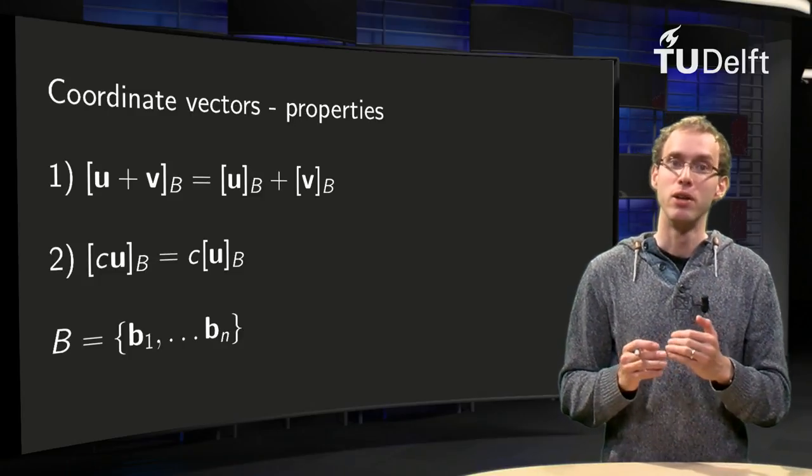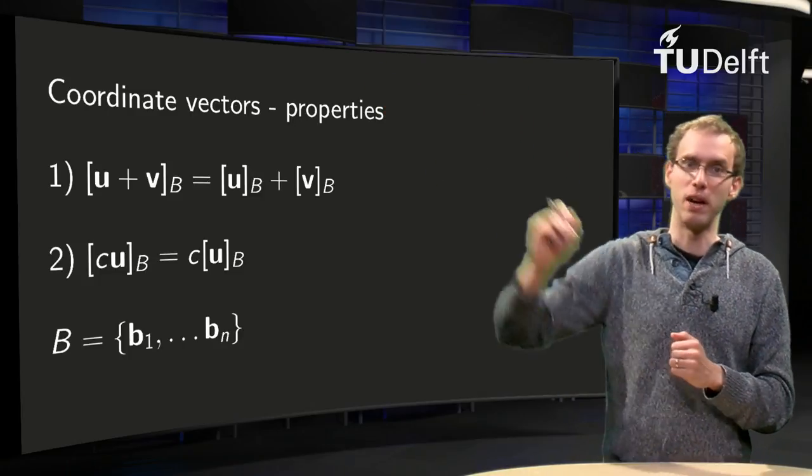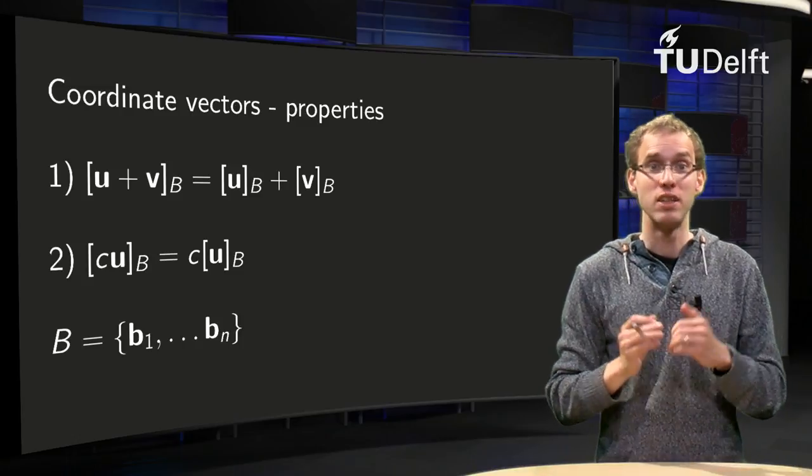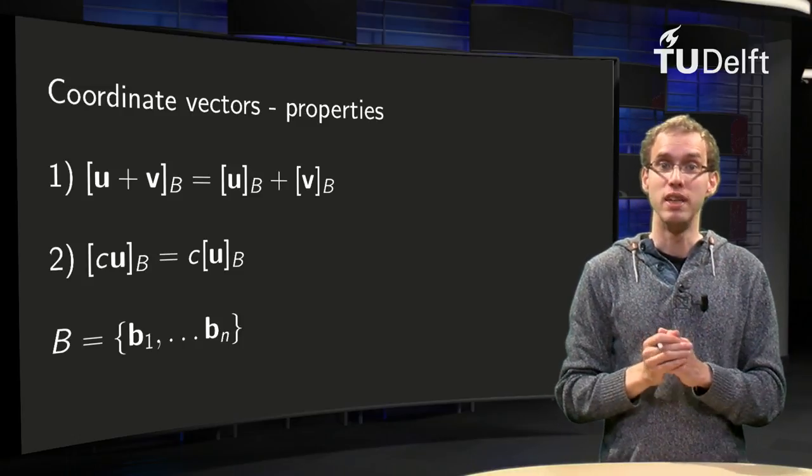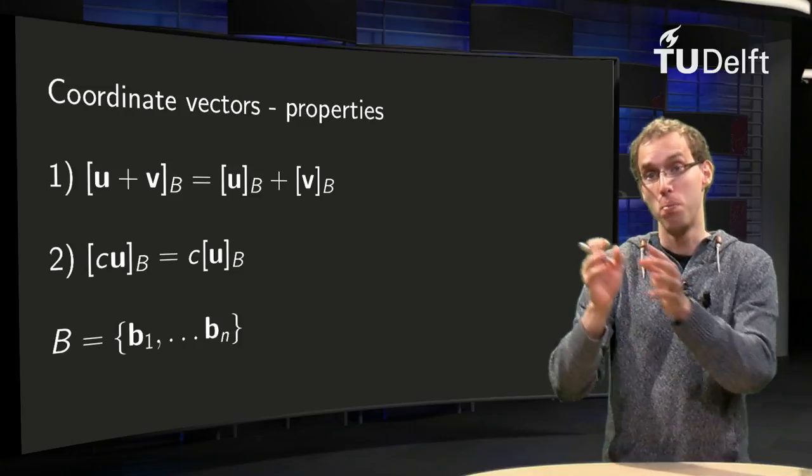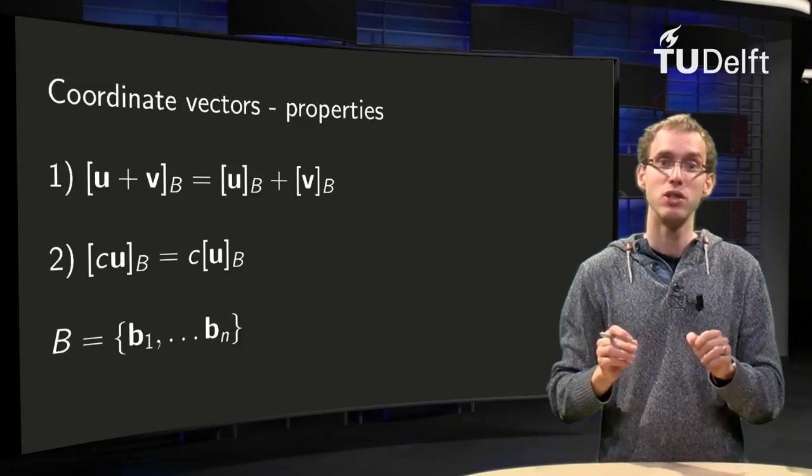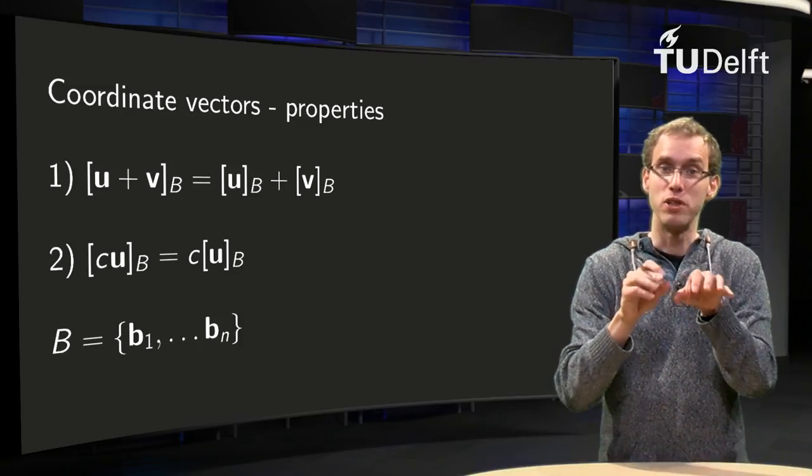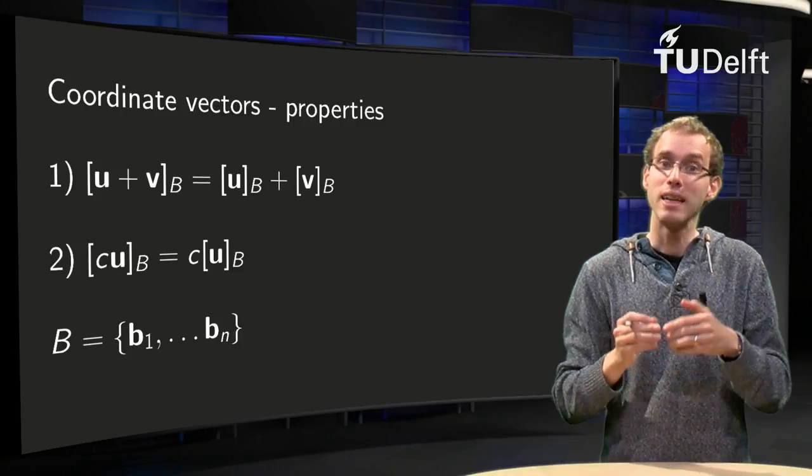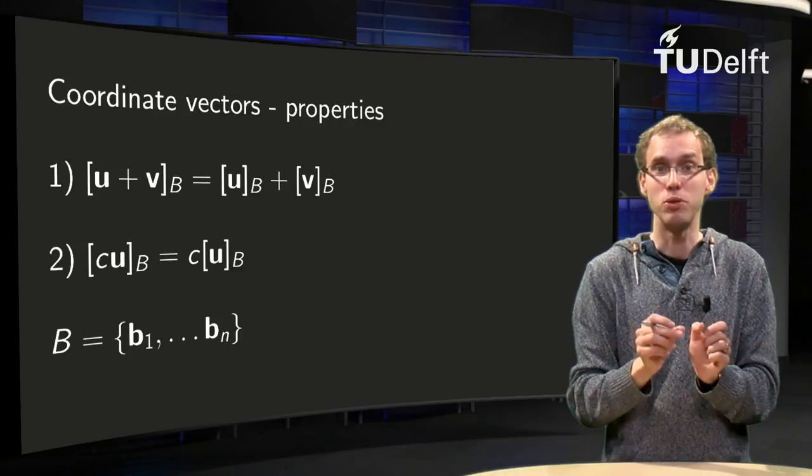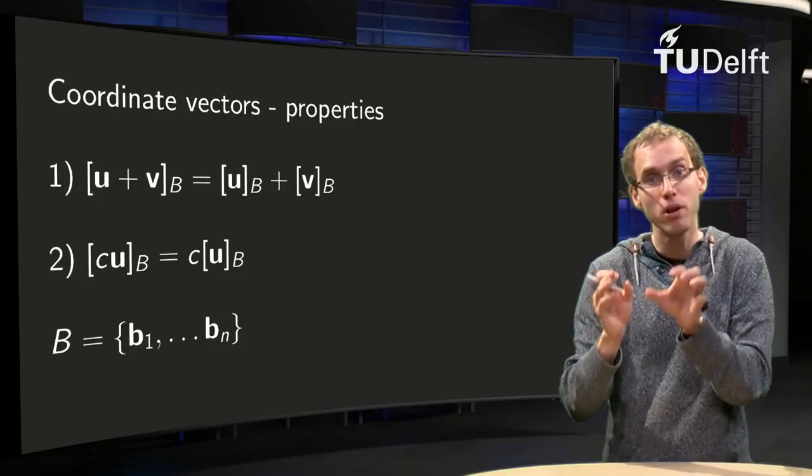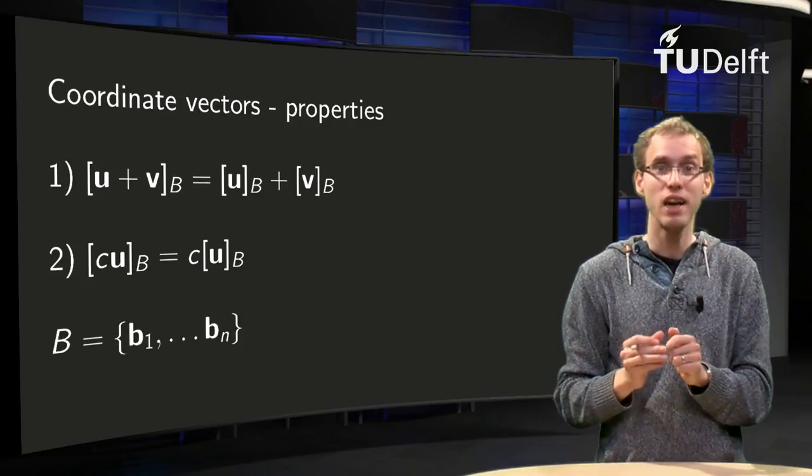Essential part are the two properties which are listed over here. That is that the coordinate vector of u plus v equals the coordinate vector of u plus the coordinate vector of v, so you can take the plus thing out, and that the coordinate vector of c times u equals c times the coordinate vector of u, so you can take scalars out.